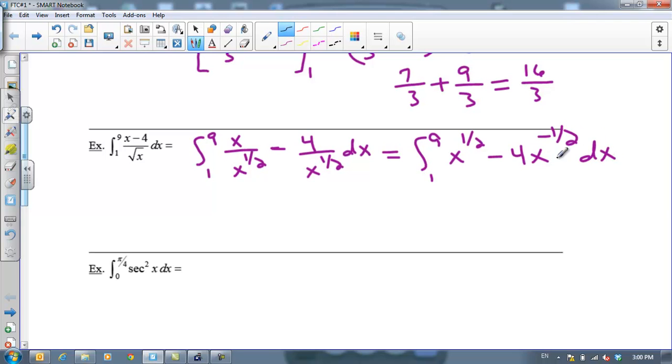And then I can take my anti-derivatives so I'm going to add 1 to 1 half which is 3 halves. Dividing by 3 halves is the same thing as multiplying by 2 thirds. So I'll have 2 thirds x to the 3 halves. And then when we add 1 to negative 1 half we get 1 half. Dividing by 1 half is the same thing as multiplying times 2 so I'm going to get minus 8 x to the 1 half. And we're going to evaluate this from 1 to 9.